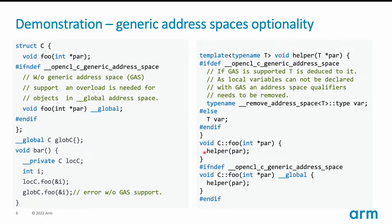Now let's complete our example. On the right-hand side we have the definition of our member foo. The second overload is again conditioned by the feature test macro. Inside the foo body we are calling a helper function, which is a template function whose template parameter type T is used to declare the pointer parameter to this helper function. The common case in C++ is that you would use T to create local variables.